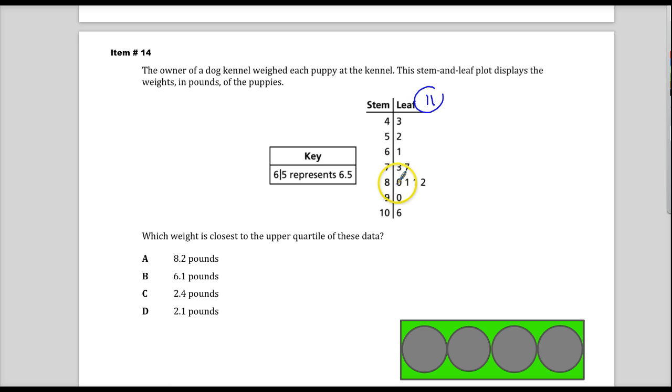Now, this 8 doesn't mean 8.0, 1, 1, 2. These are all different numbers. So for the first one, I'll do 4.3, 5.2, 6.1, 7.3, 7.7. I'm not going to make you sit here and listen to me talk. I'm just going to do them in silence for a minute. Okay, so now that I have them...